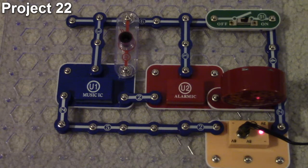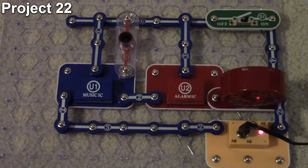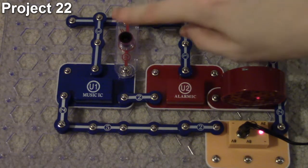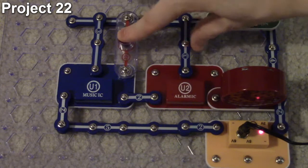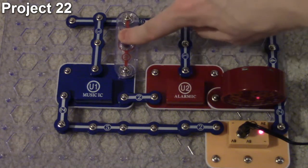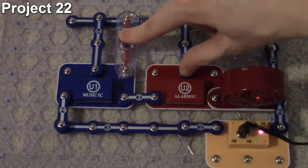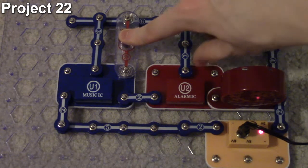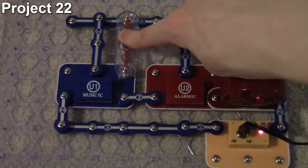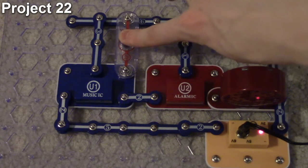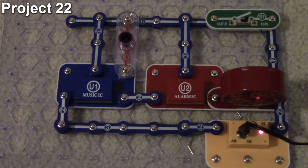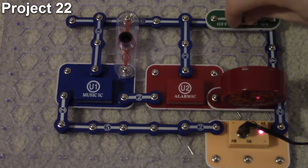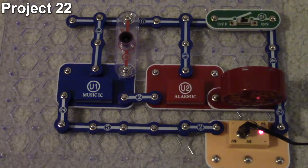Now also we've got this input on the alarm integrated circuit. We've got one on the left, one on the right, and using those different places will change it, we'll see that in other projects. That's how project number 22 works, so let's move on to project 23.